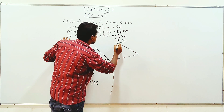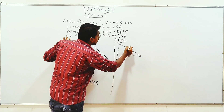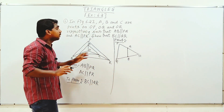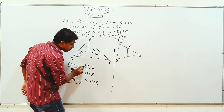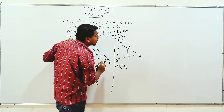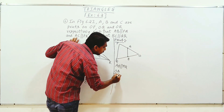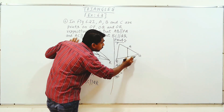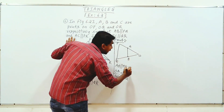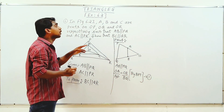So this is triangle POQ with points P, O, Q. Here is A and here is B. Now this triangle is drawn separately. Since AB is parallel to PQ, by the BPT theorem, this gives us Equation 1.